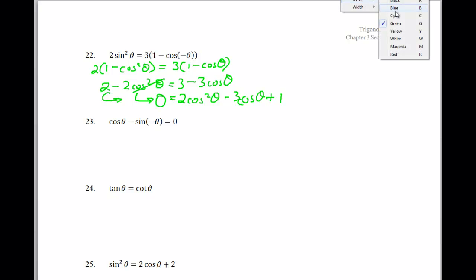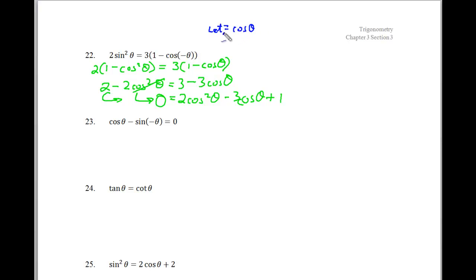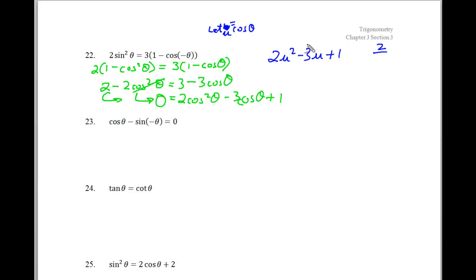Let u equal cosine of theta, which means u squared equals cosine squared theta. So we have 2u squared minus 3u plus 1. To factor, I multiply 2 times 1 to get 2, and I need a combination that makes negative 3 — that's negative 1 and negative 2. So I split the middle term.